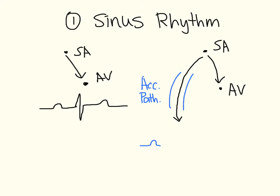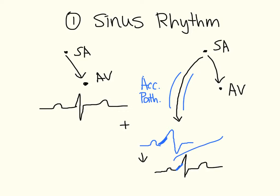On an ECG, the SA node impulse reaches the accessory pathway and depolarizes the ventricles earlier and wider. Since there are two different ways to depolarize the ventricles, the ventricle depolarizes first through the accessory pathway and then the regular depolarization catches up. What you see is this earlier depolarization — this is the delta wave. You can also see that the resultant QRS complex is wide.